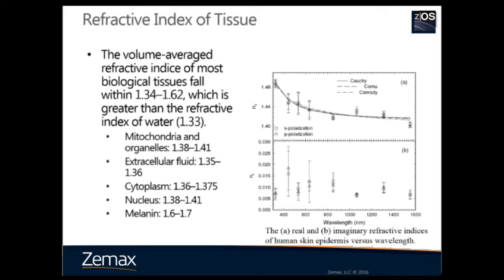Tissue is part of the optical system, so we need to know its refractive index when we design an optical system. Typically we use 1.33, similar to the refractive index of water. However, as you can see from this slide, the refractive index varies a lot from tissue to tissue. For example, a nucleus is about 1.4 and melanin is about 1.6. Also, as shown in this figure, the refractive index is also a function of wavelength.